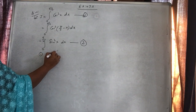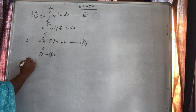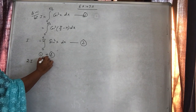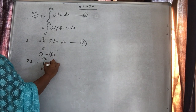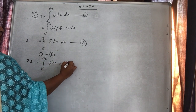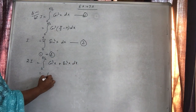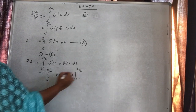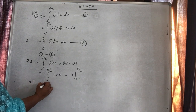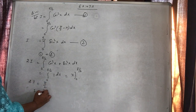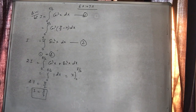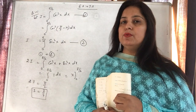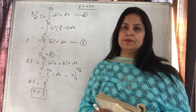Agar hum first aur second dono ko add karein, toh I plus I — left hand side mein 2I. Limit same hai, 0 to π/2. Cos square x plus sin square x — hum function ko add kar sakte hain because limits are same. And we know that sin square plus cos square is 1. 1 ka integration x. Upper minus lower limit daalein: 2I is equal to π/2 minus 0, so I is equal to π/4. That is by using properties of integral.